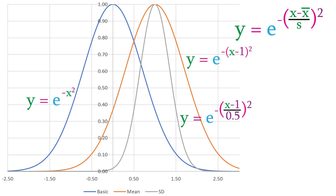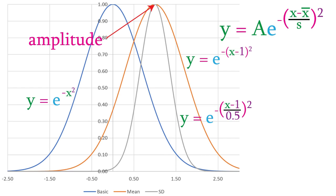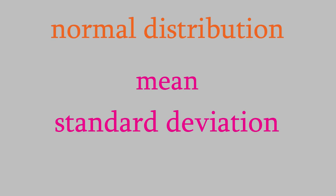The last property of a normal distribution is its amplitude. Right now, the height of this curve is 1, but we can make it higher or lower by altering the equation so that it has a constant out front. This is called the amplitude of the curve, and if we change it to 0.5, the height of the curve decreases to 0.5, like this. So, the three properties of a normal distribution are its mean, its standard deviation, and its amplitude.